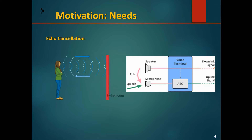The key point of acoustic echo cancelers is the filter applied to the far-end signal. This filter is essentially a model of the speaker, the microphone, and the room's acoustical attributes. As the characteristics of the near-end speaker's microphone are usually unknown in advance and can easily change — because the speaker and microphone can move — the echo cancelers have to be adaptive.